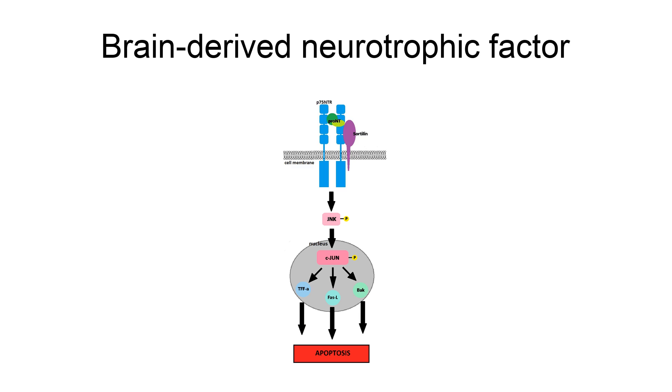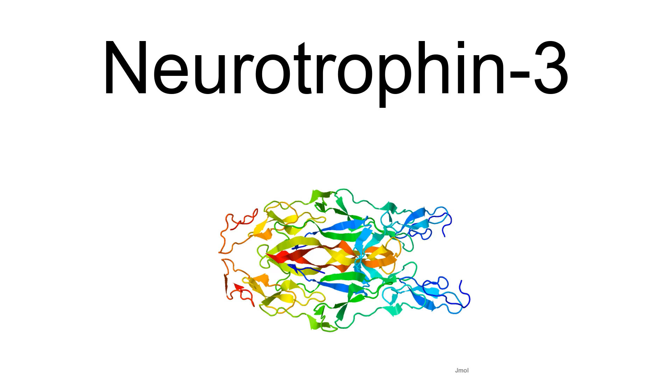Neurotrophin-3, or NT3, is a neurotrophic factor in the NGF family of neurotrophins. It is a protein growth factor that has activity on certain neurons of the peripheral and central nervous system and helps to support the survival and differentiation of existing neurons and encourages the growth and differentiation of new neurons and synapses. NT3 is the third neurotrophic factor to be characterized after NGF and BDNF.